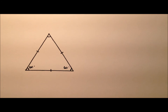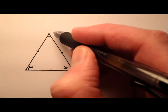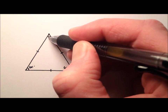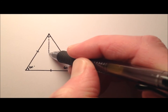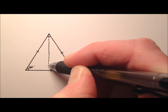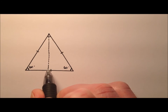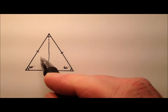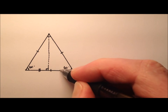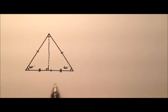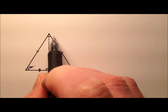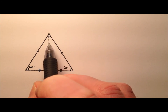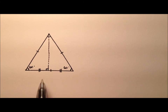I'll label those bottom two angles. What I'm going to do is draw this angle bisector straight down from the top, and it's going to hit this bottom at a right angle, dividing the triangle into two equal pieces. It's not only an angle bisector — it's also going to bisect the bottom side.